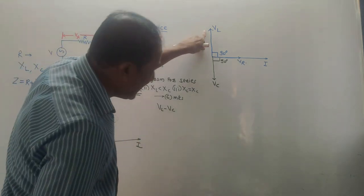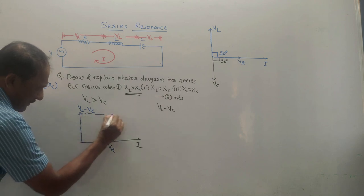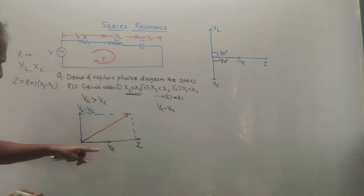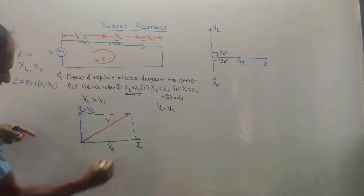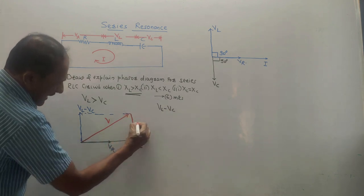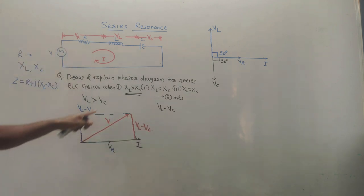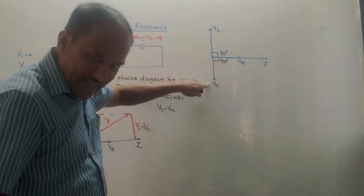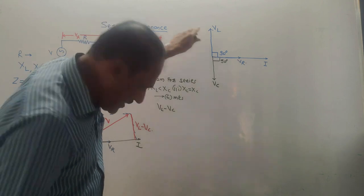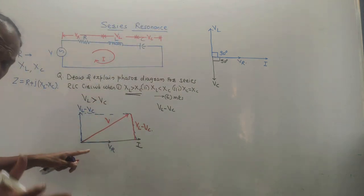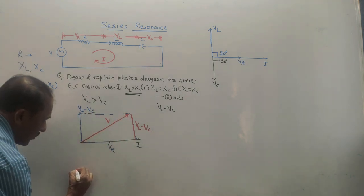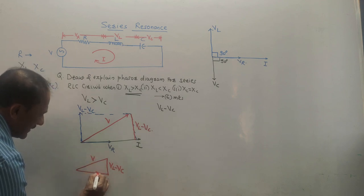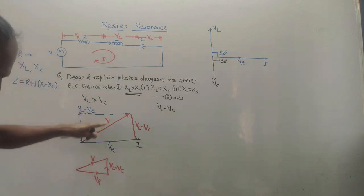The resultant of VR and (VL − VC) can be drawn by completing the rectangle. This resultant voltage is V. Since one side is VL minus VC, the opposite parallel side is also VL minus VC. This is the phasor diagram for the first condition, XL greater than XC. If a voltage triangle is asked, simply extract it from the diagram: one side is VL minus VC, the hypotenuse is V, and the base is VR.